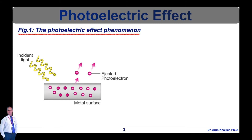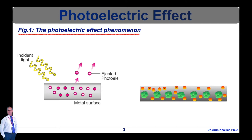It is important to note that the emission of photoelectrons and the kinetic energy of the ejected photoelectrons is dependent on the frequency of the light that is incident on the metal's surface. The process through which photoelectrons are ejected from the surface of the metal due to the action of light is commonly referred to as photoemission.